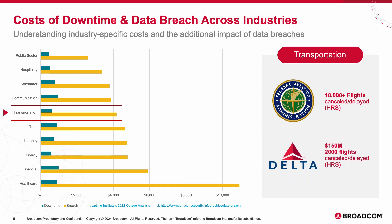A power outage in Atlanta caused Delta Airlines' computer system to fail, which generally wouldn't be an issue with Delta's backup systems in place. However, the critical systems and network equipment did not switch over for whatever reason. This impacted over 2,000 flights and cost Delta an estimated $150 million.